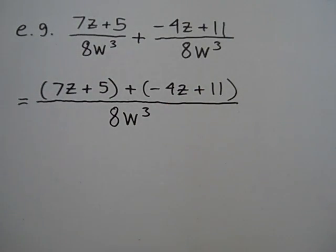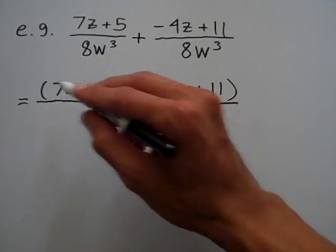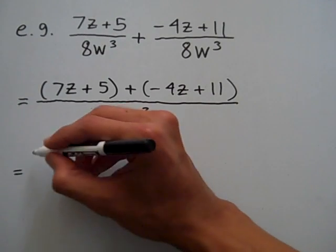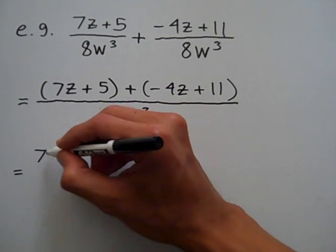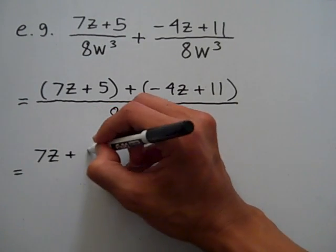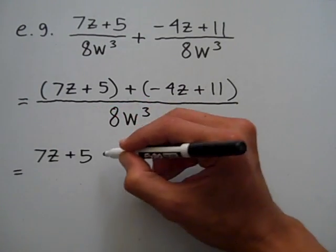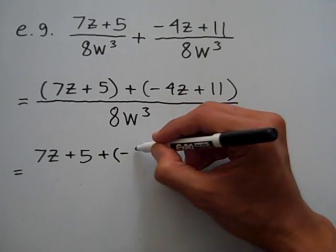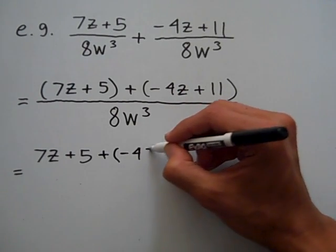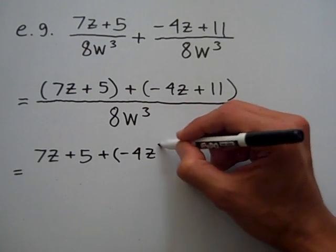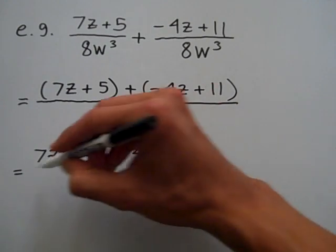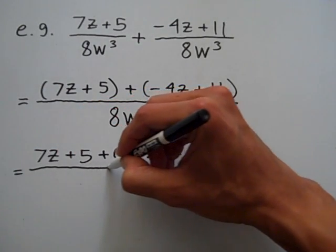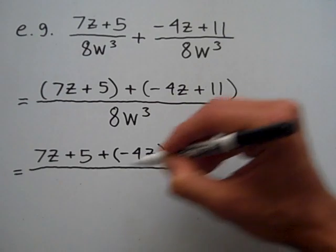Simplifying the numerator by removing the parentheses, it will become 7z plus 5 plus negative 4z plus 11, and all of that over the same denominator, 8w cubed.